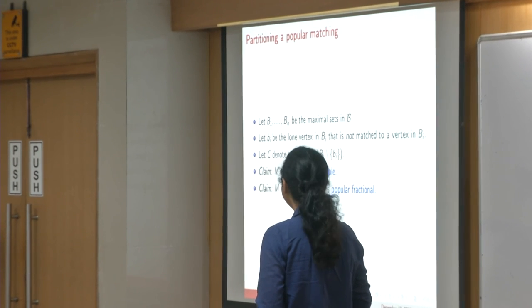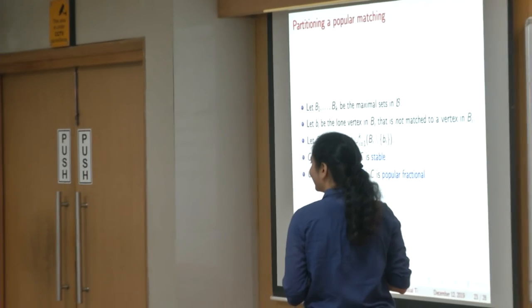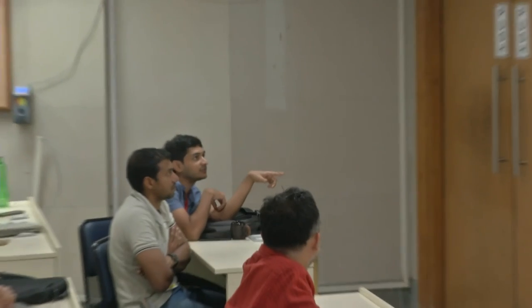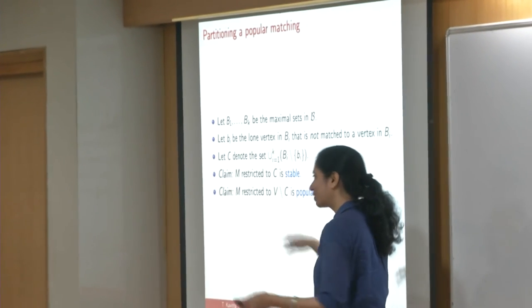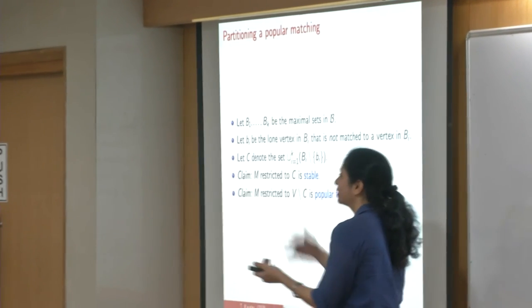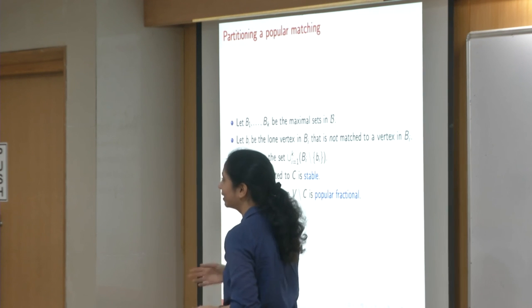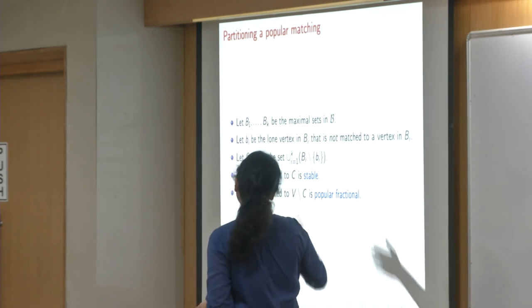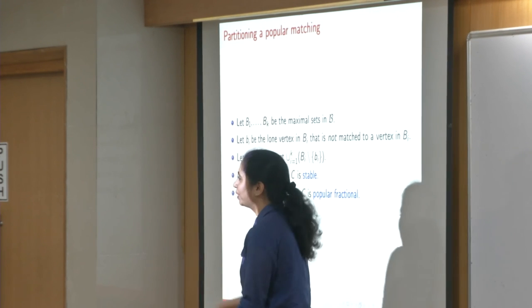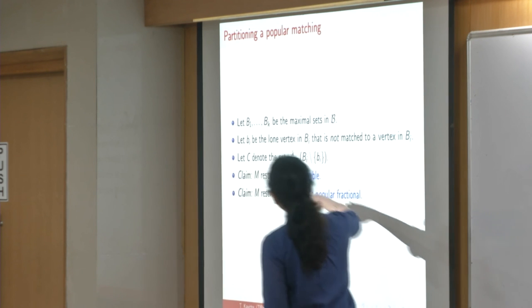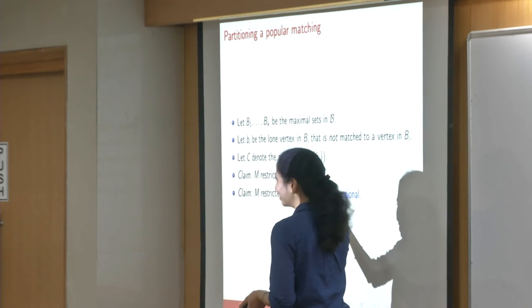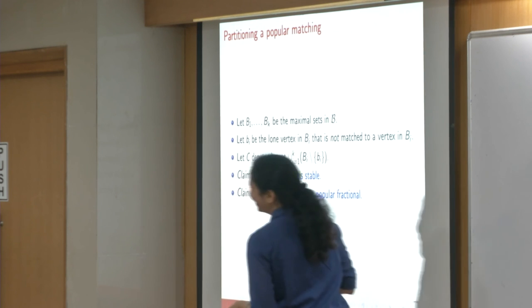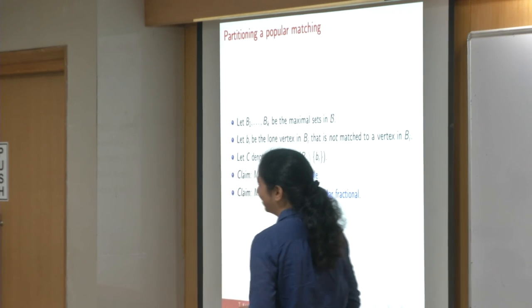In bipartite graphs, every popular matching is also popular fractional, because a fractional matching is just a convex combination of matchings — if a convex combination defeats you, some integral matching itself must defeat you. So in bipartite graphs, a popular matching exists if and only if a popular fractional matching exists, and we actually have nicer decompositions in bipartite graphs, though the decomposition is trivial there.